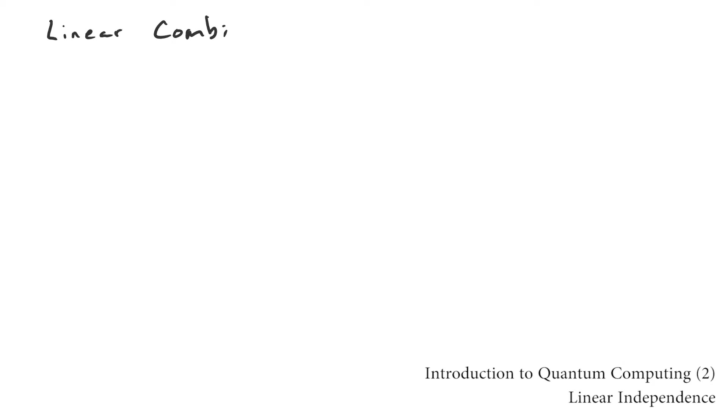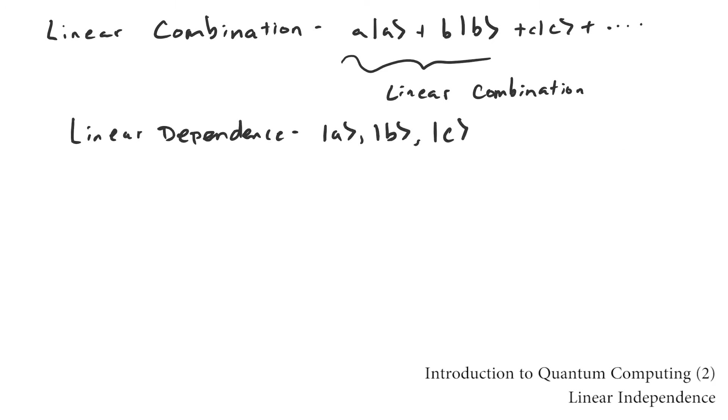It's common to scale vectors by numbers and then add them together, so this gets a name, linear combination. If we have a group of vectors and some vector in the group can be expressed as a linear combination of the other vectors in the group, the group is linearly dependent. Linear independence is the opposite.